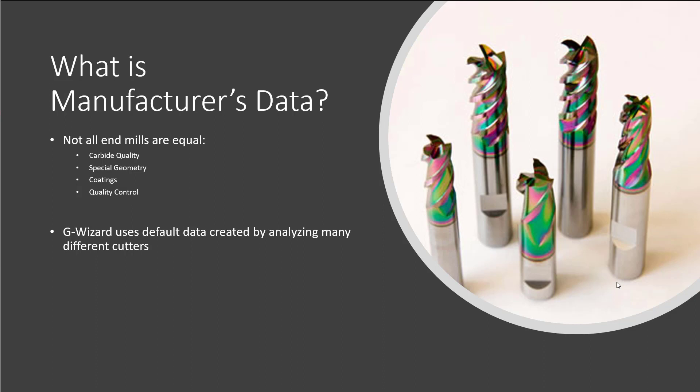G Wizard has default data on all the cutter types it supports. This data was produced by analyzing data from many different tooling catalogs using a proprietary algorithm, then fine-tuned over many years of use by over a hundred thousand CNC users. It's good, practical data — not remotely theoretical. It's solid middle-of-the-road data focused on tool life. If you use G Wizard properly and practice good machining technique, you'll hardly ever break a tool with this data.